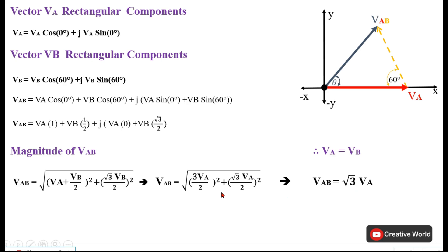Here I would like to mention: in a three-phase system we have the same amplitude of all three phases. They are separated with 120 degrees of angle, but they have the same voltage. So here, for easiness of the scenario, I have considered VA equal to VB. So I have replaced the VB with VA. The magnitude of VAB is calculated.